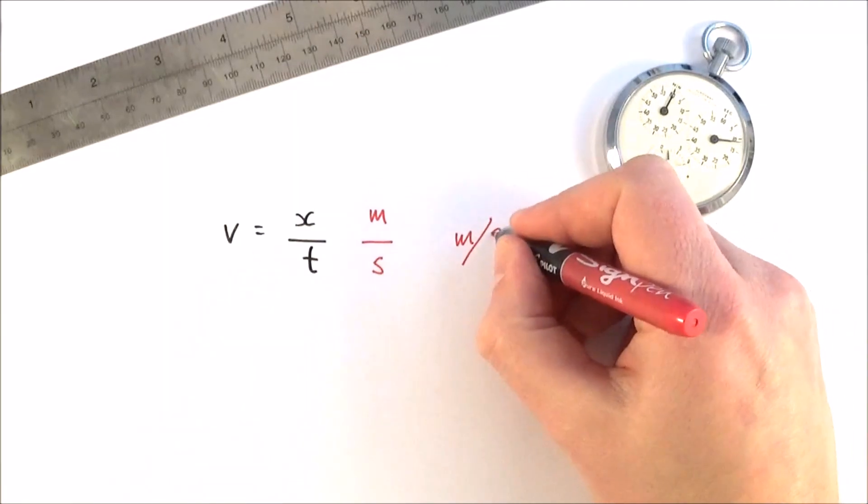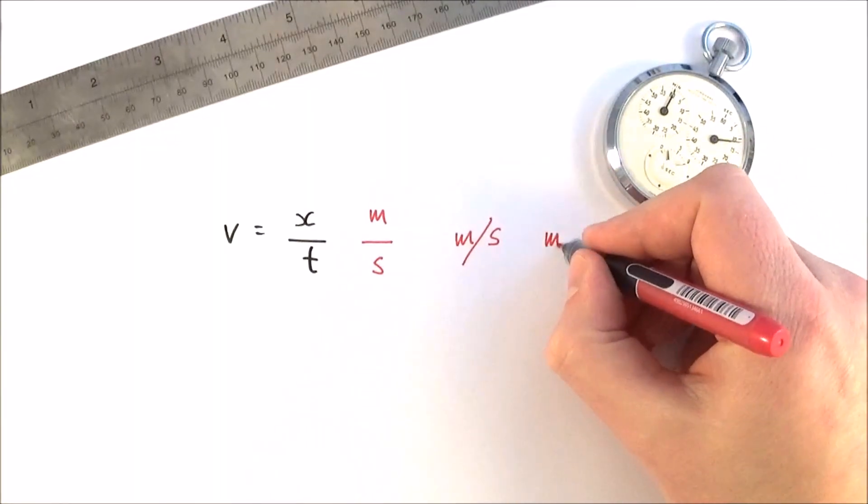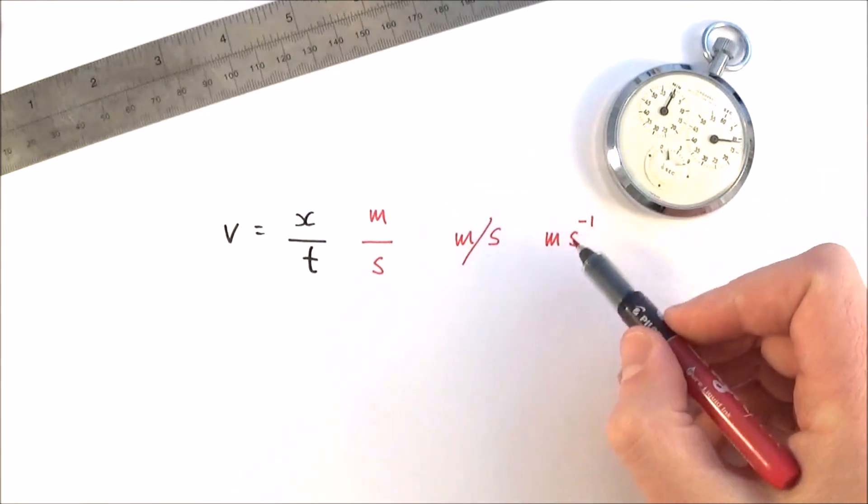And we can write this. Traditionally at GCSE we maybe use metres per second, but the better way of showing this is metre second to the minus one. The s to the minus one means it's one over s.